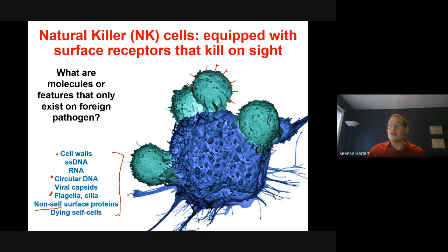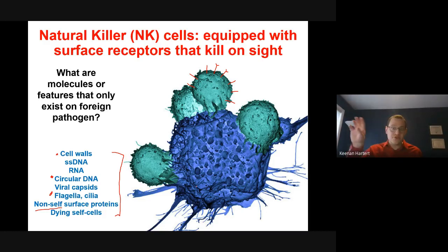Sometimes you will get a eukaryotic cell come in — remember a blood transfusion, for example. If you get blood that doesn't match yours, your immune system will think that's an invasion, even though it looks human. Your cells go through an education process to tell what cells are yours and what are not.